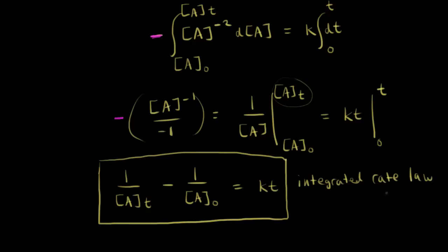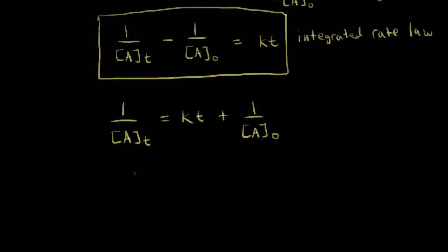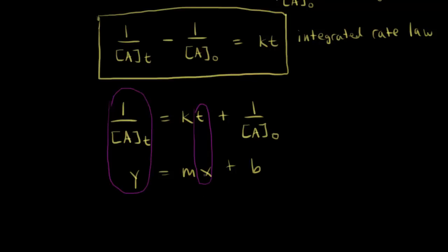Some people call this the integrated rate equation — it doesn't really matter which term you use. This is very useful because we can rearrange it. We move the one over initial concentration of A to the right side, giving us: one over the concentration of A equals KT plus one over the initial concentration of A. Now this looks very familiar — this is the equation for a straight line: y equals mx plus b.